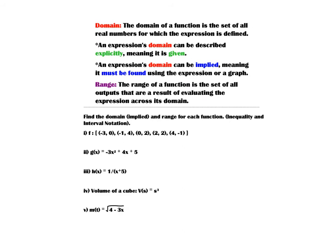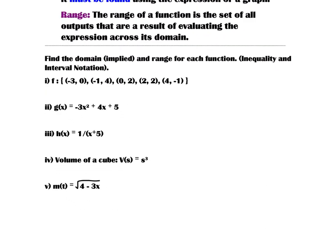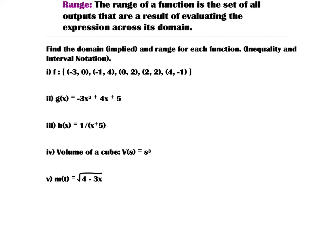Now we're going to get into domain. Domain is defined as the set of all real numbers for which the expression is defined. An expression's domain can be described explicitly — meaning it's given to you — or it can be implied, meaning it must be found using the expression or a graph. The range of a function is the set of all outputs that are a result of evaluating the expression across its domain. We'll find the implied domain and range for each function using inequality and interval notation.